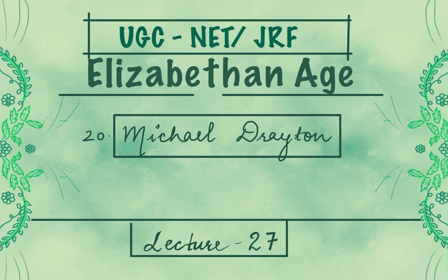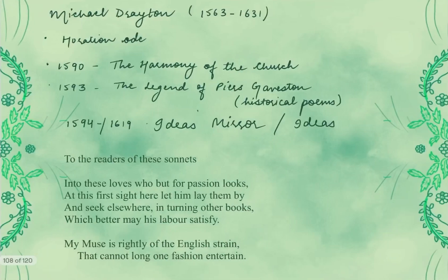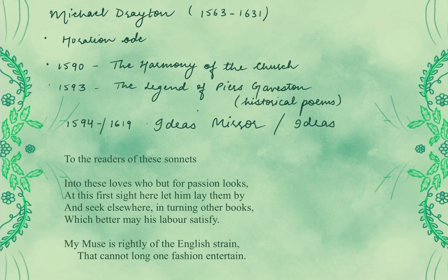Before we have studied the rest of the writers, we are going to see the order of chronology by date of birth — that's why it's important. So let's come directly to the writer: Michael Drayton. Michael Drayton's dates are 1563 to 1631.